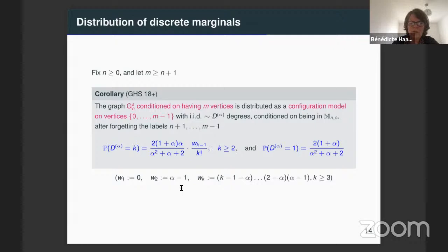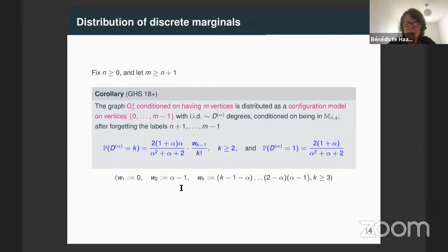We have the one-dimensional distribution of this discrete marginal, and we can obtain their joint distribution by noticing that they can be constructed according to an algorithmic construction. This construction was first introduced by Philippe Marchand to construct recursively the marginal of the alpha-stable tree, and we have something similar here to construct the discrete marginal of the alpha-stable graph.